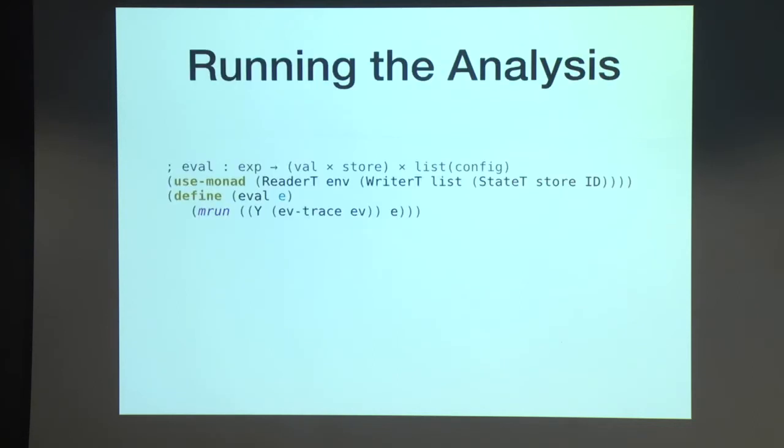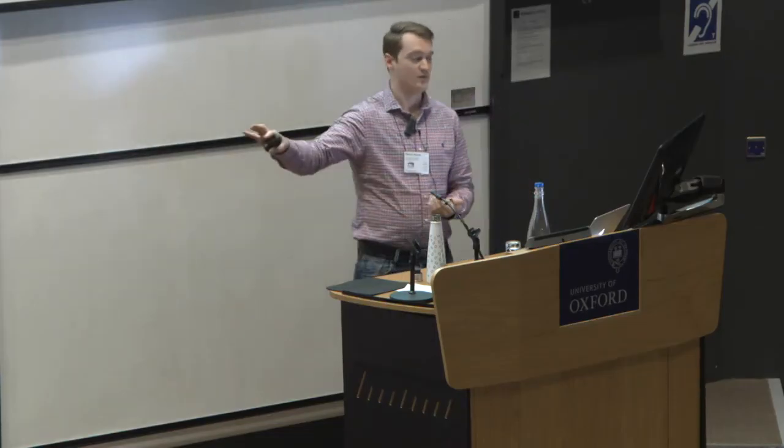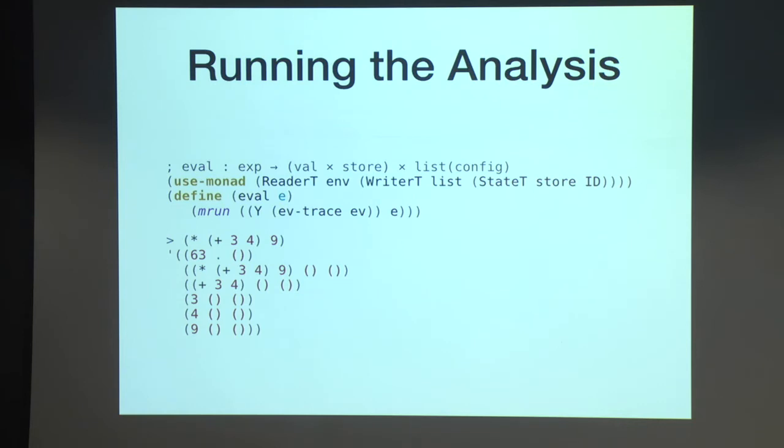So to run this analysis, we need to build some other stack of monads here. I'm using reader-t, writer-t, and state to get the monadic interface satisfied. And then to run it, we apply the fixed point combinator after we wrap EVTrace around EV. So EVTrace and EV are going to mutually call each other. The y-combinator ties the fixed point at the end of the day. And then we can run this and say, for this example, adding 3 to 4 and then multiplying by 9, you get the result 63, and then the list of all the intermediate states along the way. So some people would call this maybe a dynamic analysis.